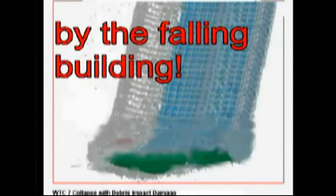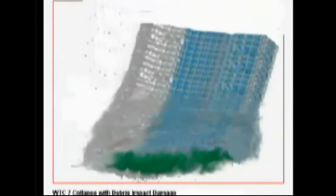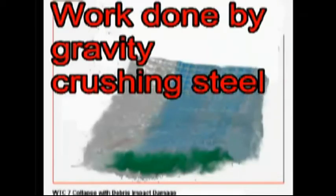Controlled demolitions are one way a building can drop at free fall acceleration for a short time. If segments of supporting beams are removed by explosives, then the building will drop at free fall acceleration until the undamaged floors hit the ground. Then the building will no longer accelerate as quickly, or perhaps not at all, because it is doing work crushing the undamaged floors.